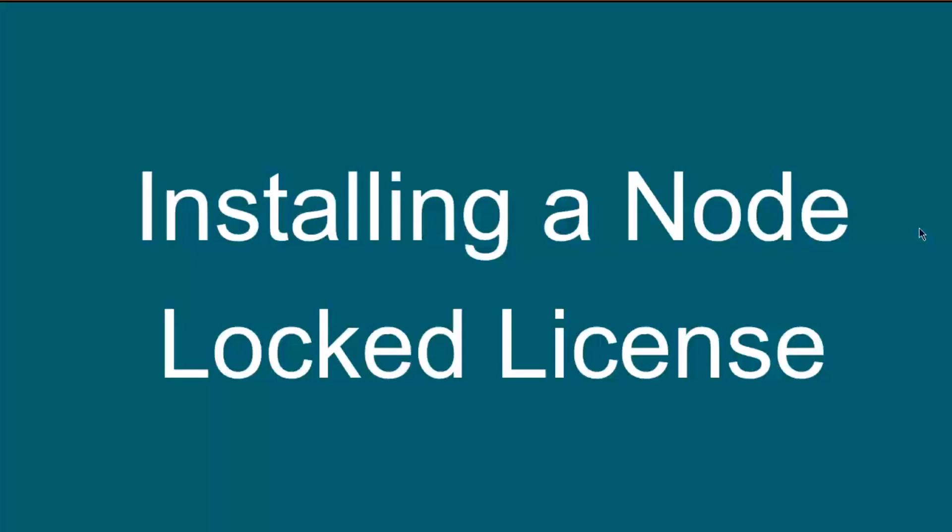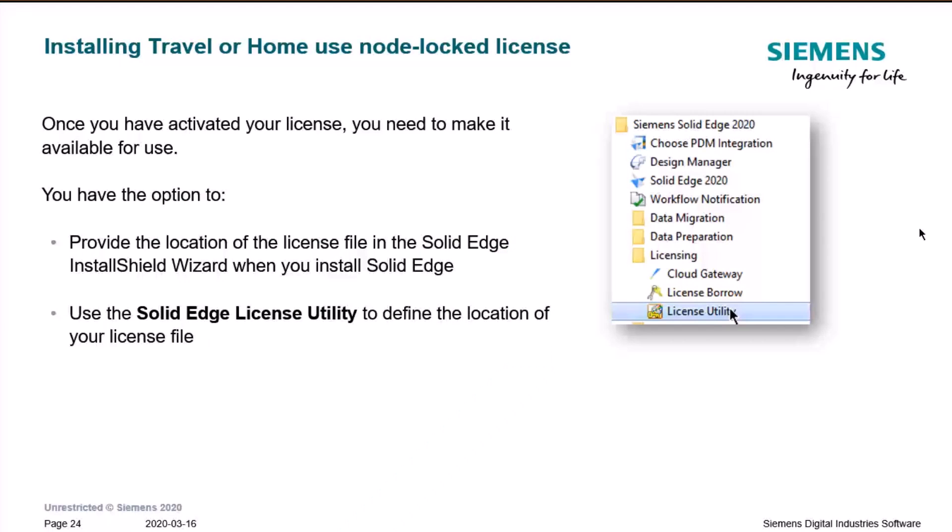After you've obtained your license and it's stored on your desktop or in an easily accessible folder, you need to install it so you can run Solid Edge. Once you have the license file, if you're installing Solid Edge fresh — for example on a home computer or laptop where it wasn't previously installed — you can run the installation and during that process select the location and point to that particular license file.